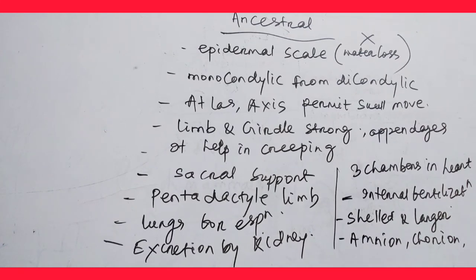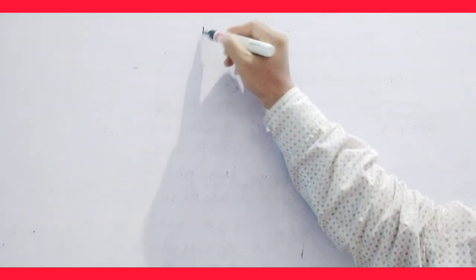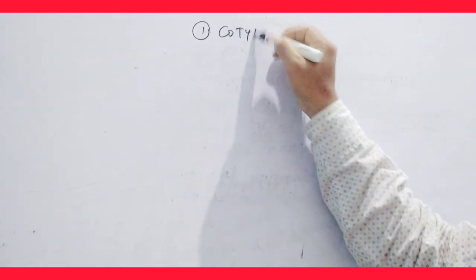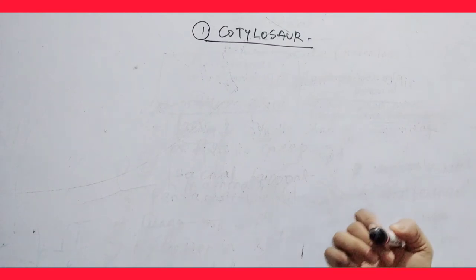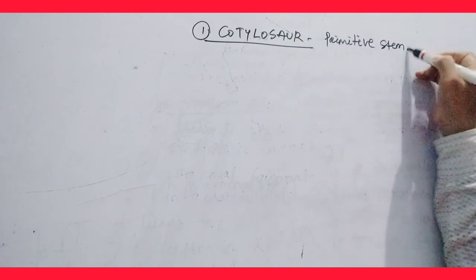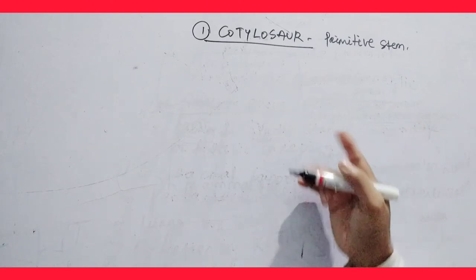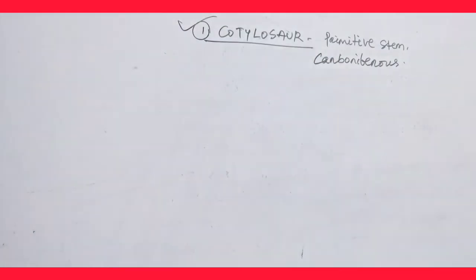What about the different ancestors of reptiles? Let us see about its ancestors — there are seven to eight ancestors. The first ancestor is Cotylosaur. These Cotylosaurs are primitive stem reptiles. They originated during the Carboniferous period.